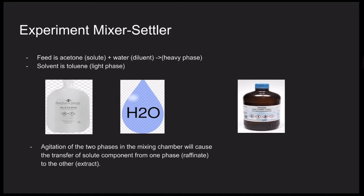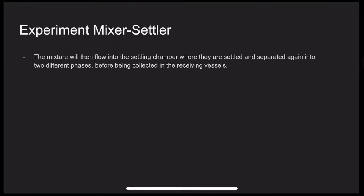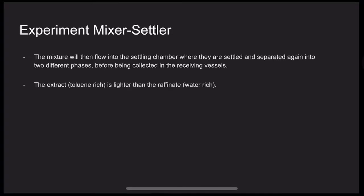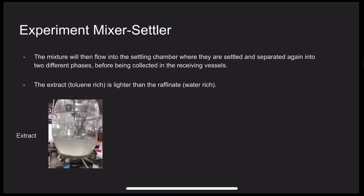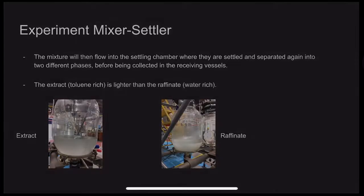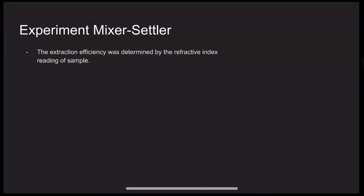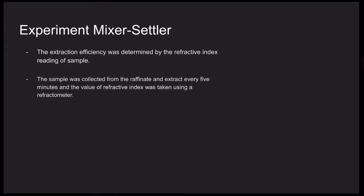Agitation of the two phases in the mixing chamber will cause the transfer of solute component from one phase, the raffinate, to the other, the extract. The mixer will then flow into the settling chamber where they are settled and separated again into two different phases before being collected in the receiving vessel. The extract, which is toluene, is lighter than the raffinate, which is water-rich. The extraction efficiency was determined by the refractive index reading of the sample.